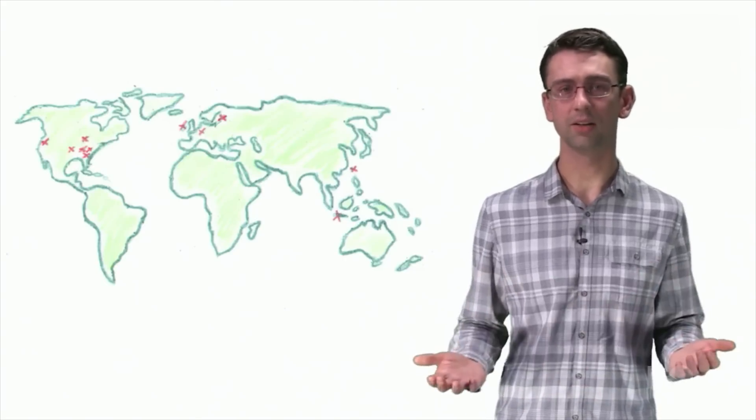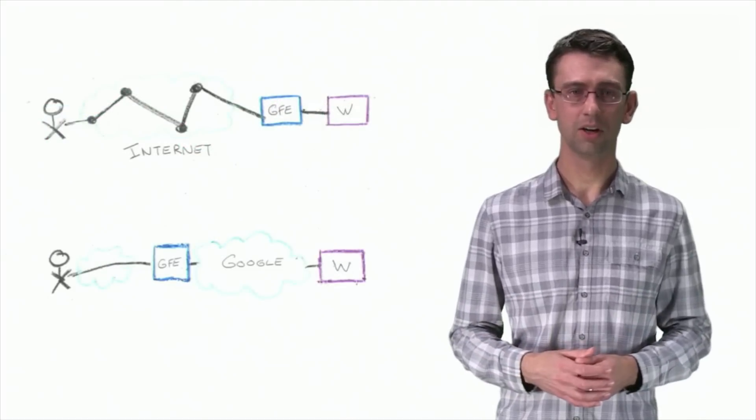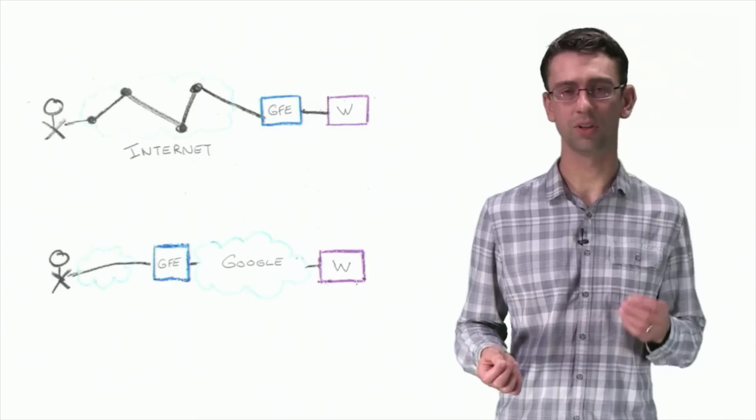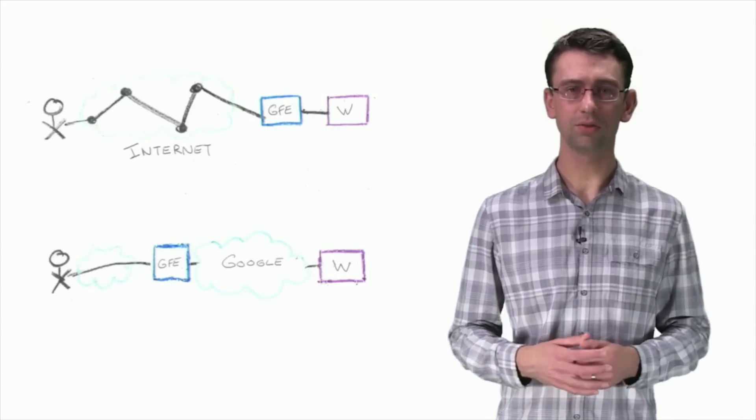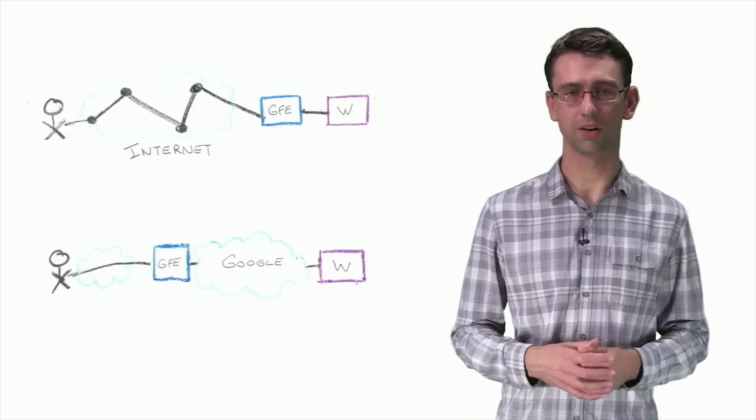As Google continued to expand, we added new data centers in Europe, Asia, and South America. By locating GFEs closer to the users, we could reduce the round-trip time between the user and the GFE. This reduced the TCP handshake time, and in turn, further decreased the latency for our users.